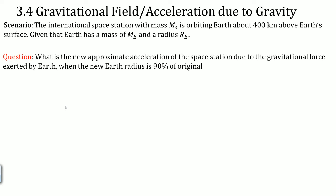The International Space Station with mass MS is orbiting Earth about 400 kilometers above Earth's surface, given that Earth has a mass of ME and a radius RE. The question asks: what is the new approximate acceleration of the space station due to the gravitational force exerted by Earth when the new Earth has a radius that is 90% of its original?